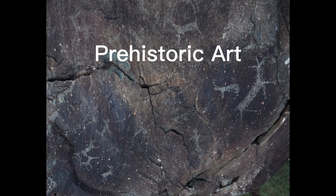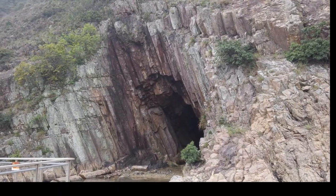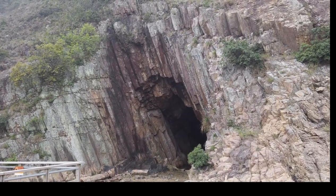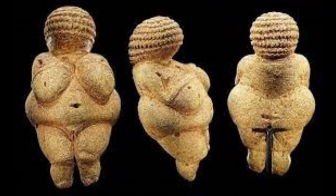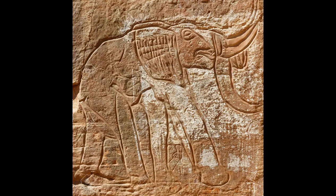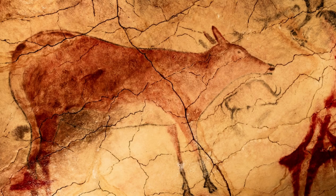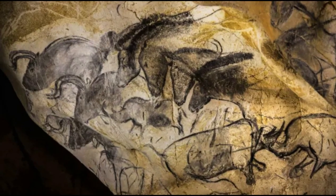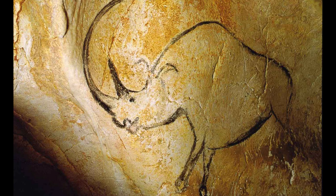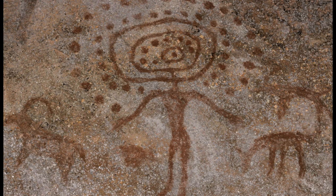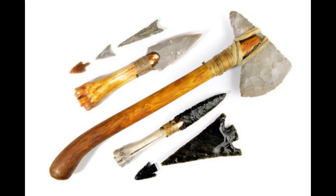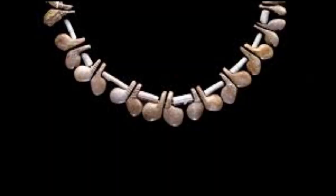Prehistoric art. The earliest known examples of art date back to the prehistoric era, when humans were still living in caves and hunting for food. Prehistoric art includes paintings, sculptures, engravings and carvings made from natural materials such as stone, bone, wood and clay. Some of the most famous prehistoric artworks are the cave paintings found in Lascaux in France, Altamira in Spain and Chauvet in France. These paintings depict animals, humans and abstract symbols, and they may have had religious or ritualistic meanings. Prehistoric art also shows the development of tools, weapons and ornaments used for practical or decorative purposes.